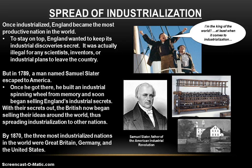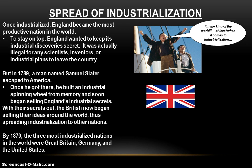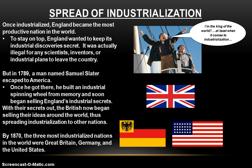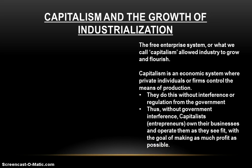Once the British realized their secrets were out, they came to the realization that keeping them secret was no longer profitable. So they just started selling their industrial ideas to other parts of the world, thus spreading industrialization to other nations. If we fast forward 80 years to 1870, the three most industrialized nations in the world are Great Britain, Germany, and the United States of America. But how does industrialization manage to grow and flourish so fast? Well, all of that goes back to an economic system called capitalism, or free enterprise, or the free market system.